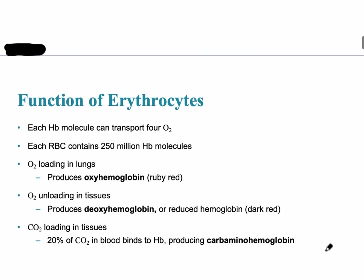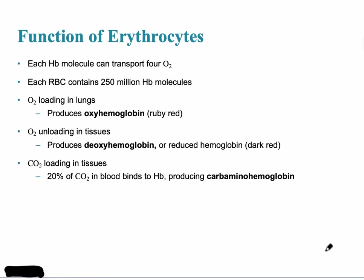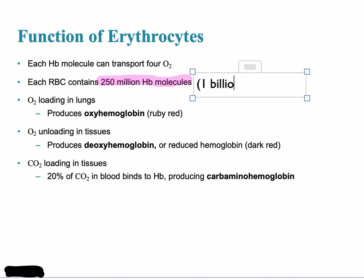Each hemoglobin molecule itself can transport four oxygen molecules, and there are 250 million hemoglobin molecules per red blood cell. That means one red blood cell can transport one billion oxygen molecules — 250 million multiplied by four — which is an incredible amount.